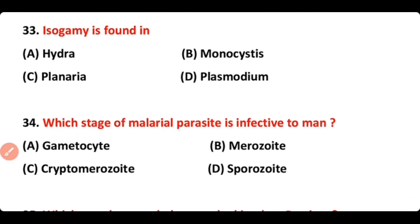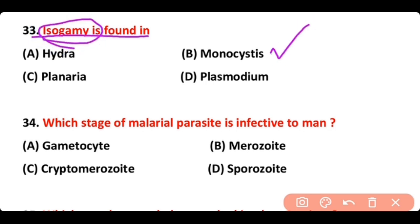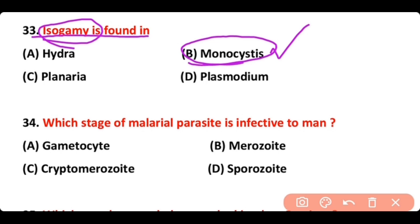Question number 33: Isogamy is found in — Hydra, Monocystis, Planaria, or Plasmodium? The correct answer is option B. Isogamy, which is a type of asexual reproduction in which similar gametes are present, is found in Monocystis, which belongs to Phylum Apicomplexa.